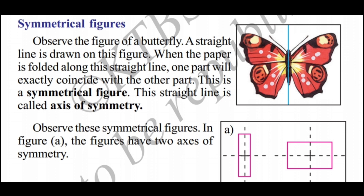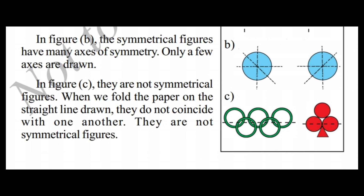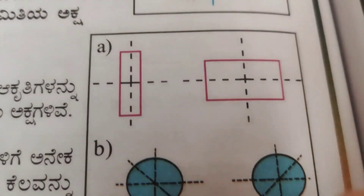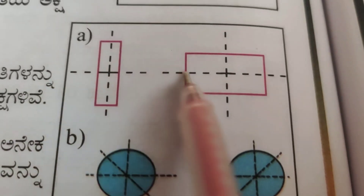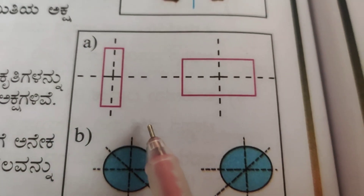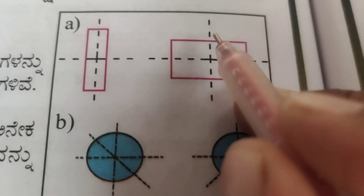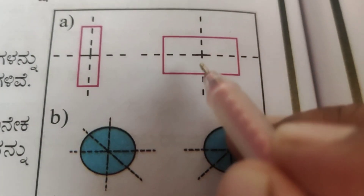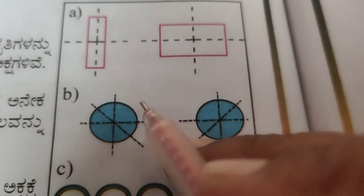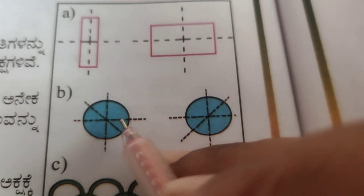Let's see some examples and other shapes. It's a rectangle shape. If you take a circle shape and fold it half and half, it's the same — the two halves coincide.